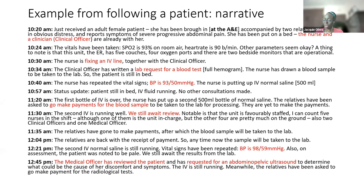This is an excerpt from a transcript of an actual patient that our research assistant was able to follow from start to processing. This particular patient was an adult female brought in accompanied by two relatives, in obvious pain and distress. She was put in a bed and observed by a nurse and clinical officer. The nurse took initial vital signs — oxygen saturation was around 93% and heart rate was 90. The data collector observed the equipment present, the number of staff, and immediate activities such as fixing an IV line. The clinician made a request for a blood test.